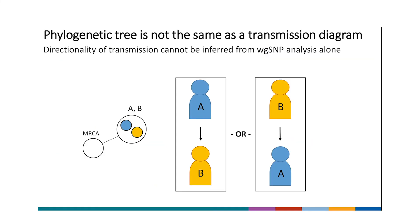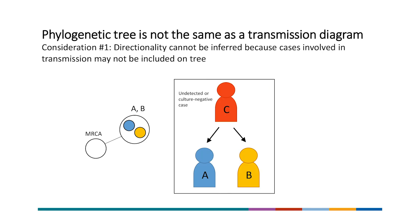An important consideration is that phylogenetic trees are not the same as transmission diagrams, because directionality of transmission cannot be inferred from WGS-SNP analysis alone. If isolates A and B are identical, it's possible that patient A could have transmitted to patient B or patient B could have transmitted to patient A. Directionality also cannot be inferred because there could be cases involved in transmission not included in the WGS analysis — for example, there may be no direct transmission between patient A and B, and transmission occurred through a third case that doesn't have an isolate on the tree because they are an undetected case or were culture negative.